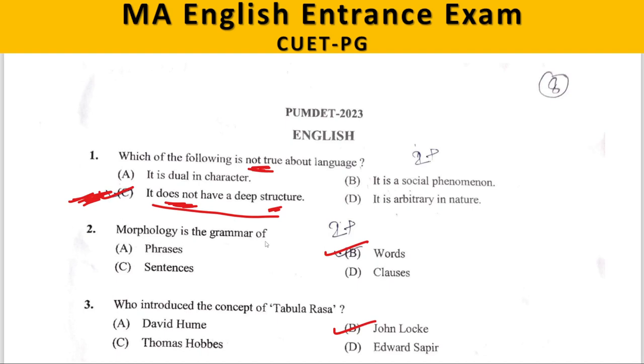Next question: Morphology is the grammar of — A. Phrases, B. Words, C. Sentences, D. Clauses. The correct answer is B — it's about words. Morphology deals with the grammar of words.